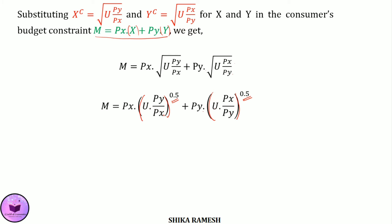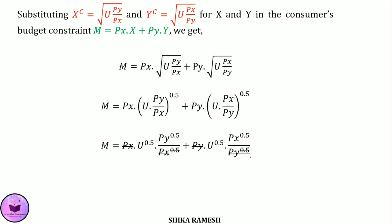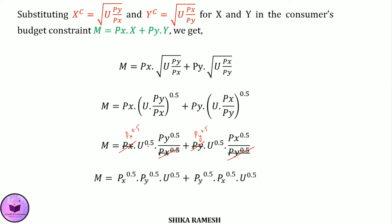Opening the brackets, we can rewrite the equation as M = PX · U^0.5 · PY^0.5 / PX^0.5 + PY · U^0.5 · PX^0.5 / PY^0.5. Here PX^0.5 and PX cancel out. Similarly, PY^0.5 and PY cancel out. So the remaining equation can be written as M = PX^0.5 · PY^0.5 · U^0.5 + PY^0.5 · PX^0.5 · U^0.5.